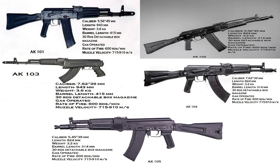The weight of the AK-101 and AK-103 is 3.6kg, while the AK-102, AK-104, and AK-105 weigh 3.2kg. The barrel length of the AK-101 and AK-103 is 415mm, and the AK-102, AK-104, and AK-105 have a barrel length of 314mm.